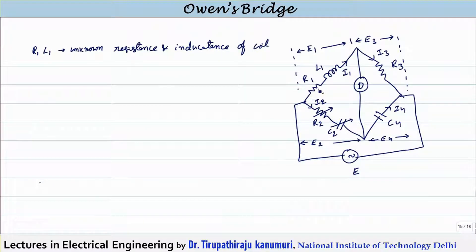This is my unknown value of the inductor, which has a resistance of R1 and inductance L1, and this is measured in terms of the capacitance. One fixed capacitor C4 will be used and a fixed resistance R3 is used, and there will be one variable resistor R2 and variable capacitor C2.